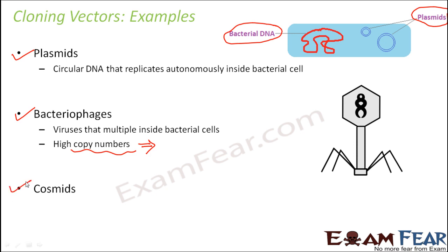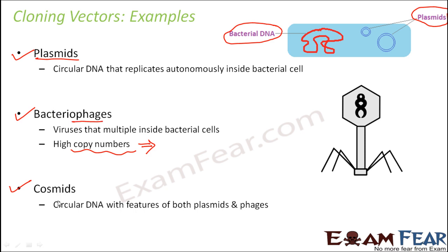The third example of cloning vectors are Cosmids. Cosmids have certain features of plasmids and certain features of bacteriophages. They are also circular DNA, but they have features of both plasmids and phages — that is why they are called Cosmids. These vectors are called cloning vectors because they help the gene of interest to clone, that is, to produce multiple copies of itself.